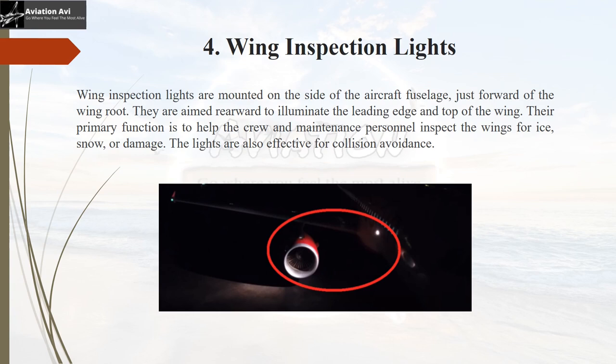Number four is the wing inspection light — the name itself clearly indicates its purpose. These lights are mounted on the side of the aircraft fuselage just forward of the wing root, and they are directed rearward so that the leading edge or the top of the wing is illuminated. The primary function is to help the crew and maintenance personnel inspect the wing for ice, snow, or damage. The lights are also effective for collision avoidance.